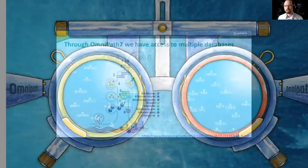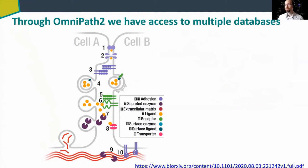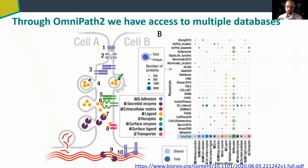First, let's see what this new feature is. Omnipath 2 will have intercellular interactions between cells, containing various databases, plus annotations for all proteins in this protein-protein interaction database — what is a ligand, what is a receptor, what are the various transporters — everything you need to understand intercellular communication. All these databases contain only a fraction of the information, so we need to put them all together to get larger coverage, and Omnipath 2 will do that.